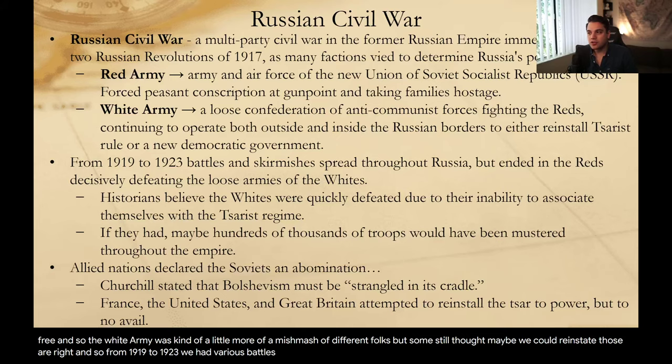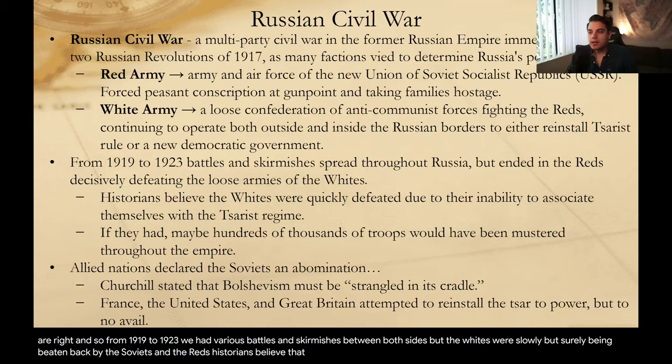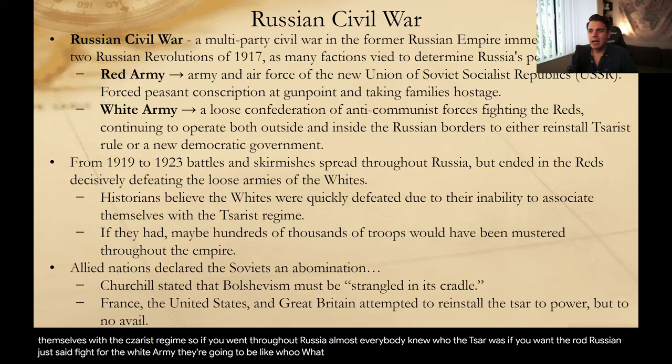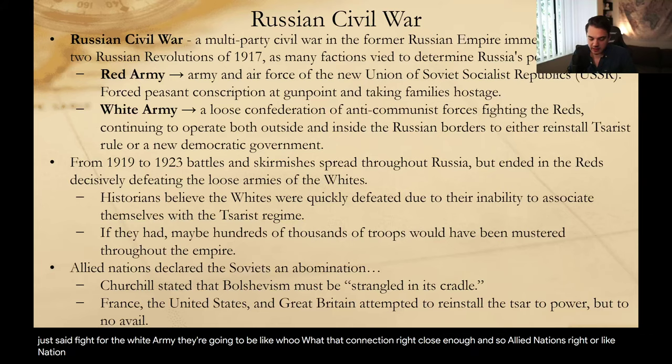From 1919 to 1923, we had various battles and skirmishes between both sides. The Whites were slowly but surely being beaten back by the Soviets and the Reds. Historians believe the Whites were defeated pretty quickly because of their inability to connect themselves with the Tsarist regime. Almost everybody throughout Russia knew who the Tsar was. If you went throughout Russia and just said 'fight for the White Army,' they're going to be like, who? So I think they did not make that connection close enough.